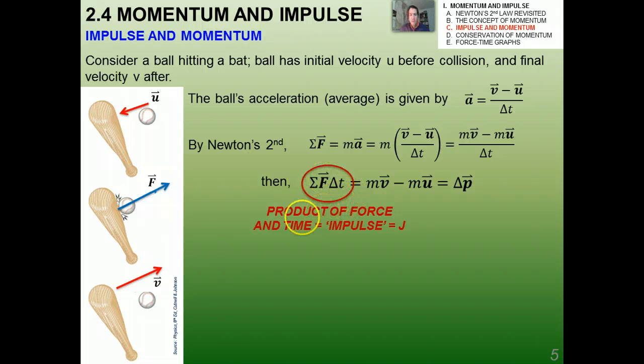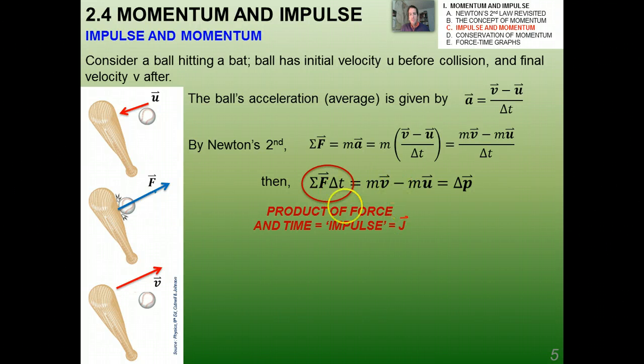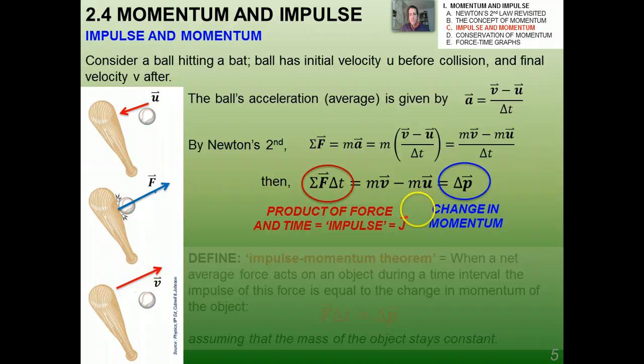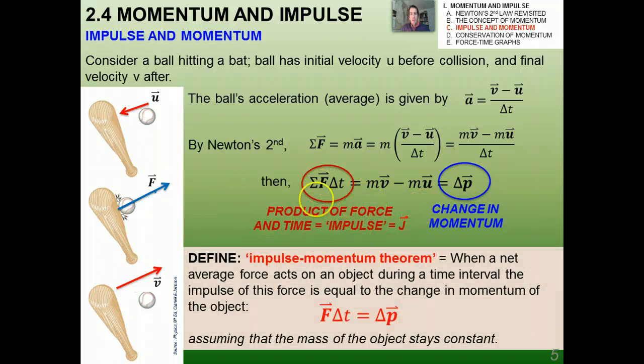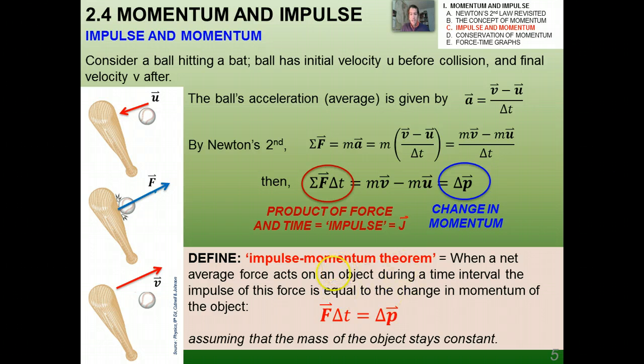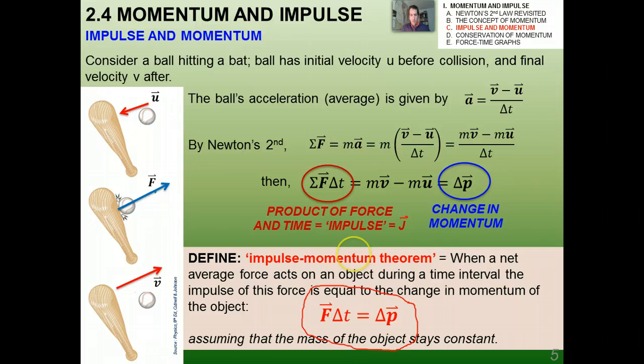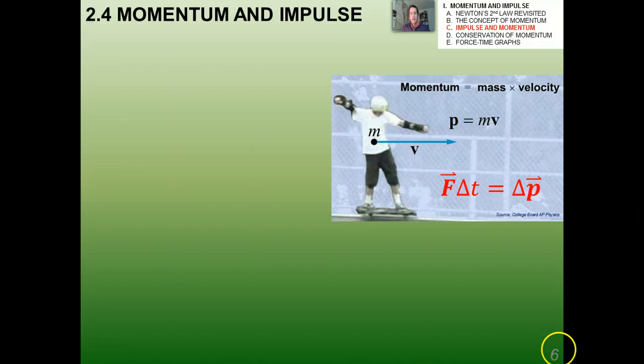This expression, the product of the force and the time in physics, is called impulse, and it's a vector quantity, and the symbol is a capital J. This is the change in momentum. You can see clearly that the impulse is equal to the change in momentum, and this is called the impulse momentum theorem. When a net average force acts on an object during a time interval, the impulse of the force is equal to the change in momentum of the object, assuming that the mass of the object stays constant. We're going to use this a lot in this class. This is a super useful theorem, and it's really crucial for solving certain kinds of problems.